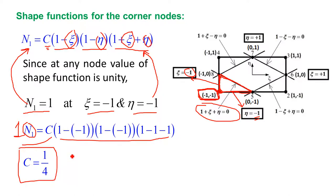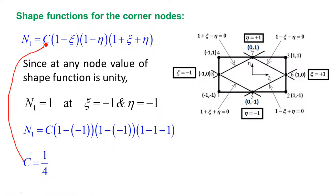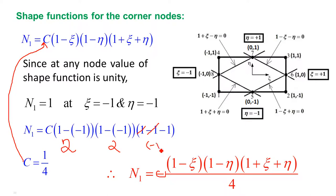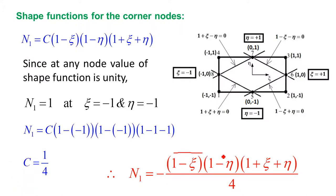This value of C = −1/4 is the same for all four corner nodes (nodes 1, 2, 3, and 4). So now C is known. Substituting back into N1: N1 = (1/4)(1 − xi)(1 − eta)(1 + xi + eta). The negative sign arises because the bracket product at node 1 evaluates to −4, making C = −1/4.